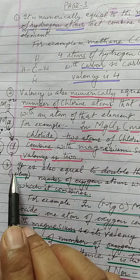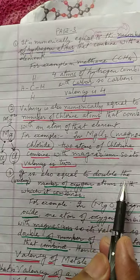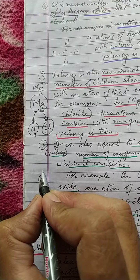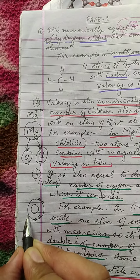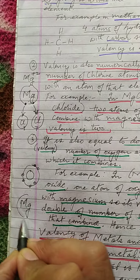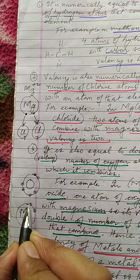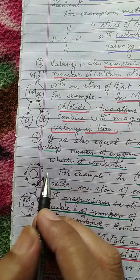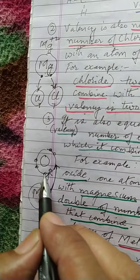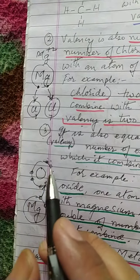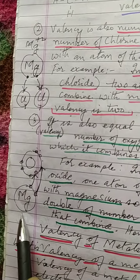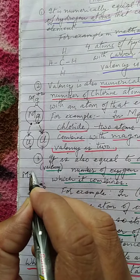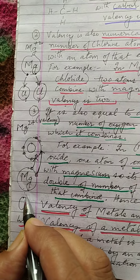The third thing about valency is that it is also equal to double the number of oxygen atoms with which it combines. An oxygen atom has six electrons in its outermost shell, and magnesium has two electrons in its outermost shell. When magnesium transfers its two electrons to the oxygen atom, the valency of magnesium is Mg²⁺ and the valency of oxygen is O²⁻, a minus two valency.